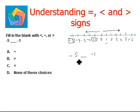So that means negative five is less than negative one. Therefore the blank is filled in by the less than sign, which is option C.